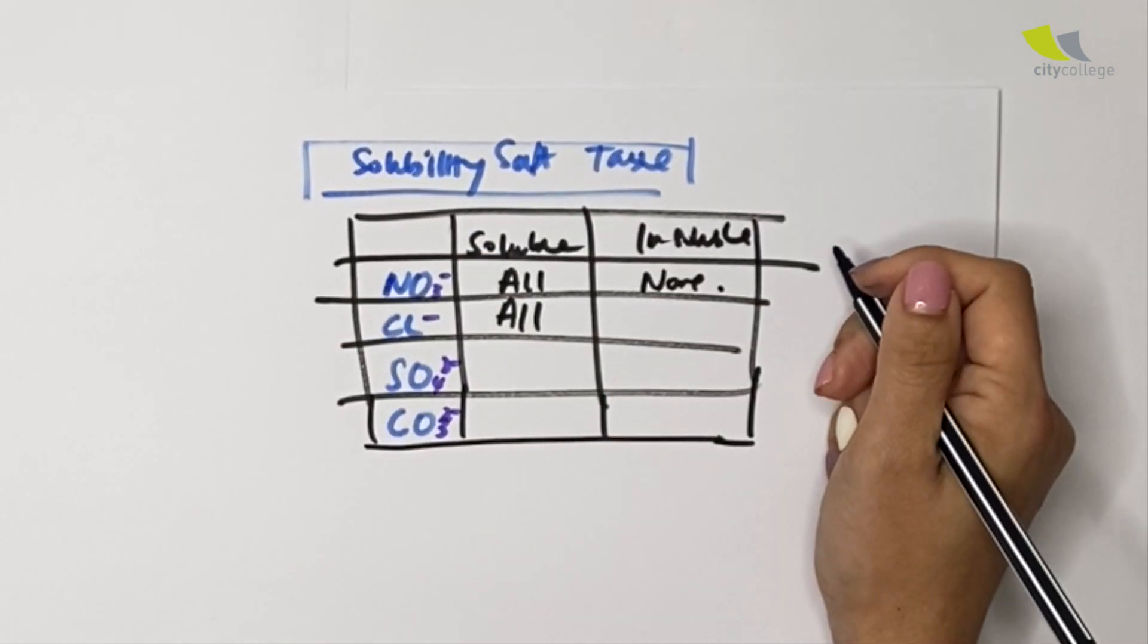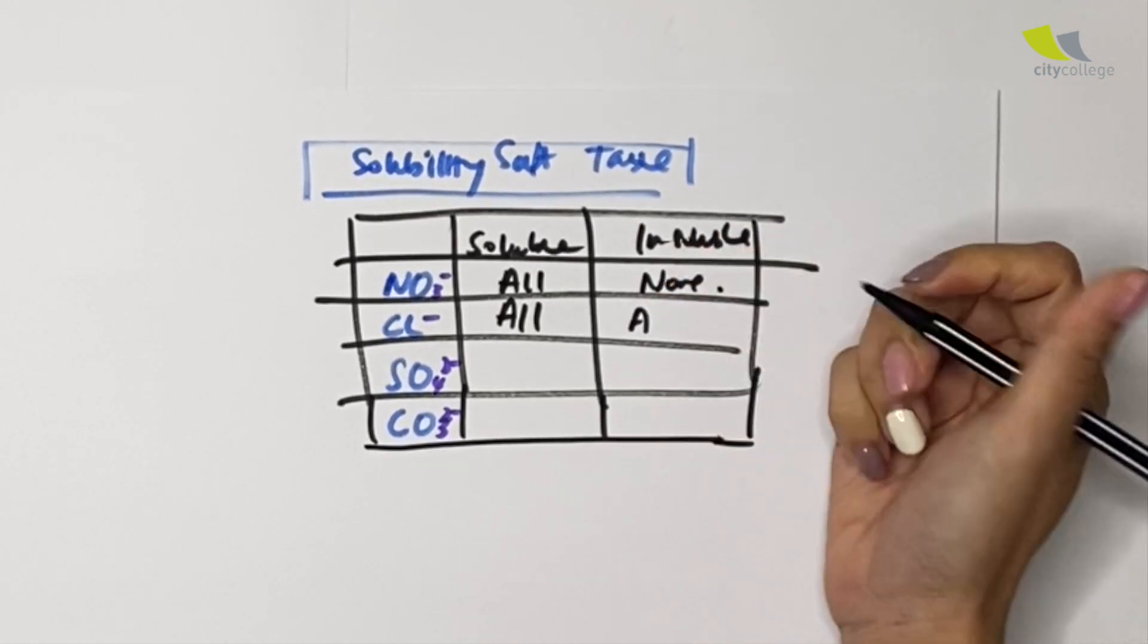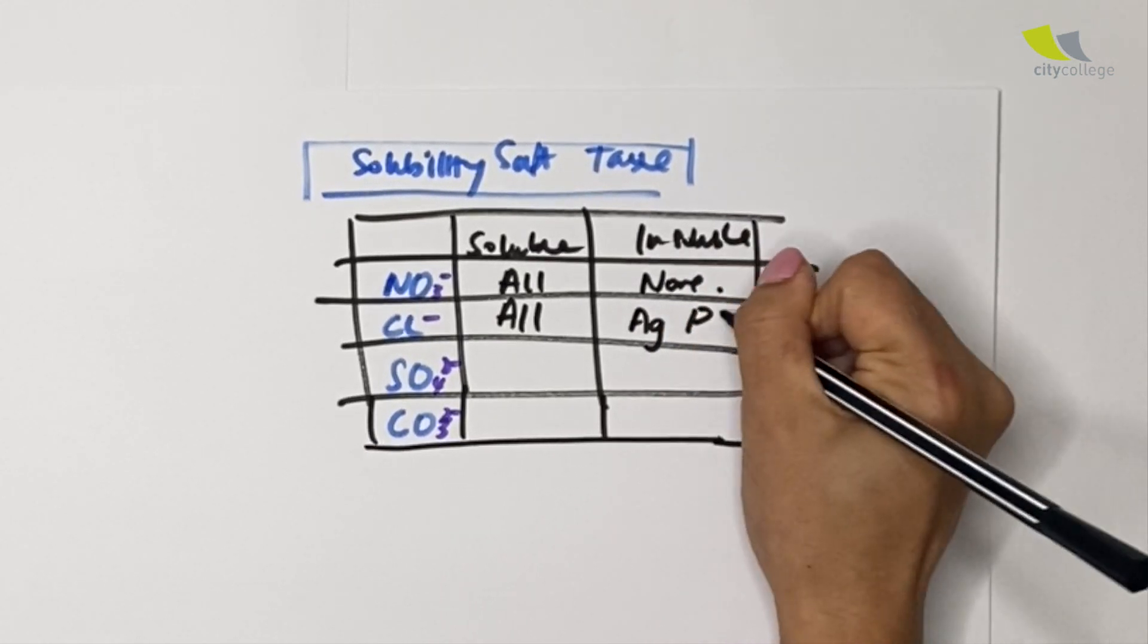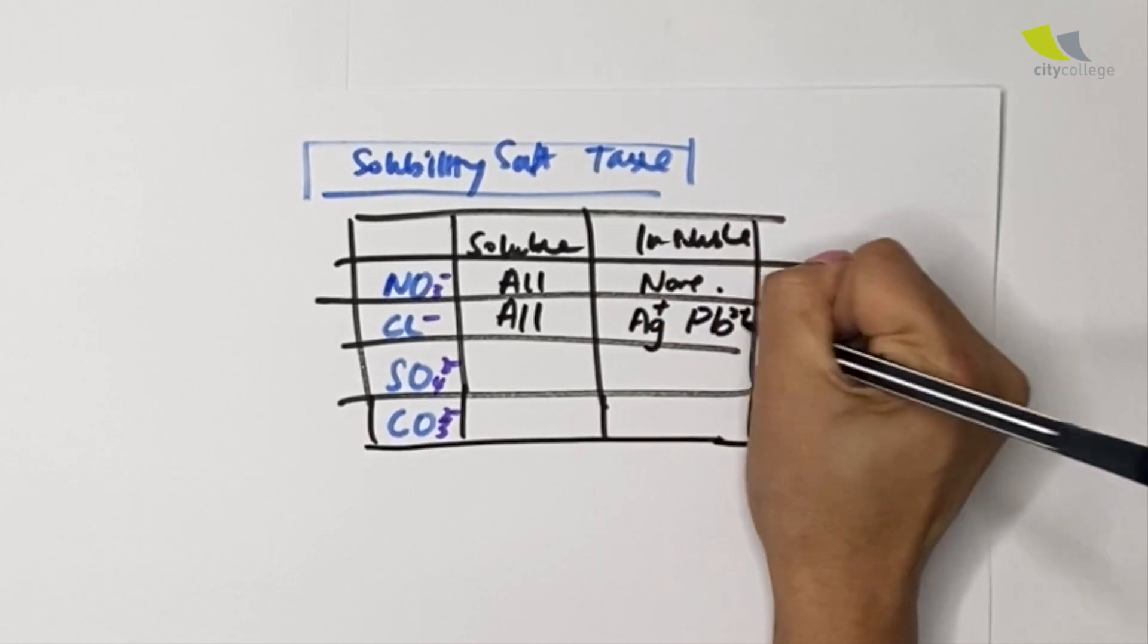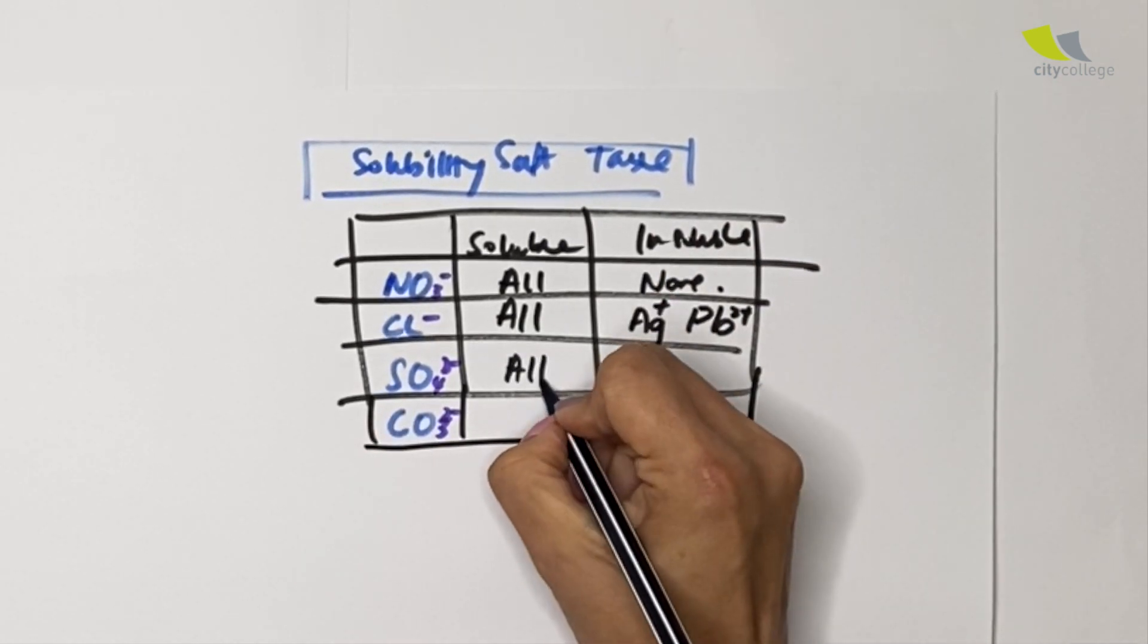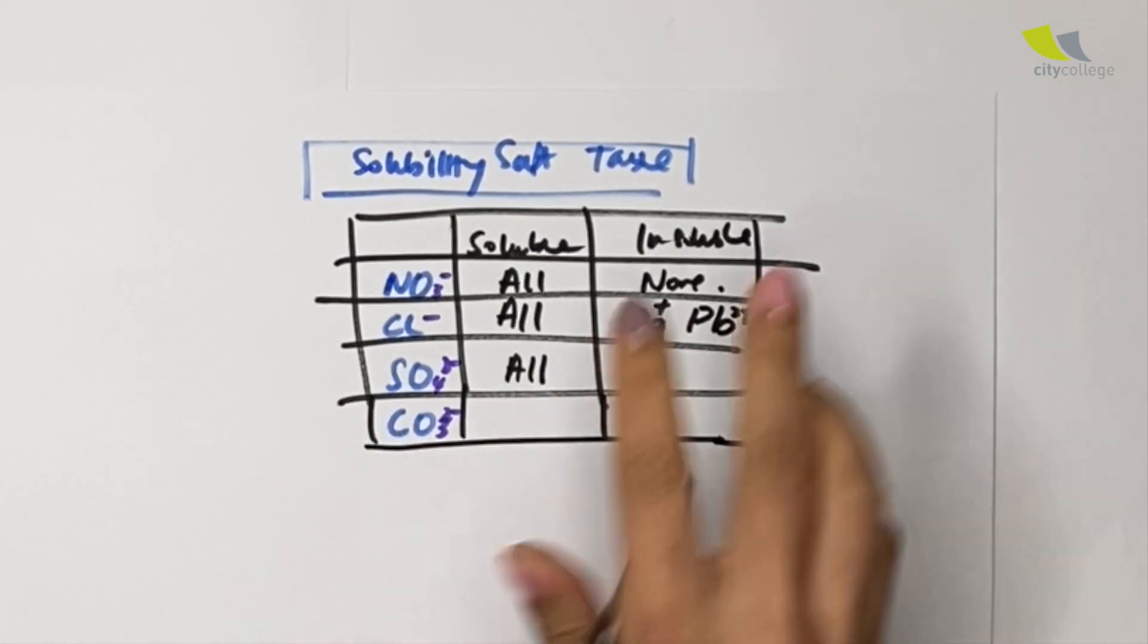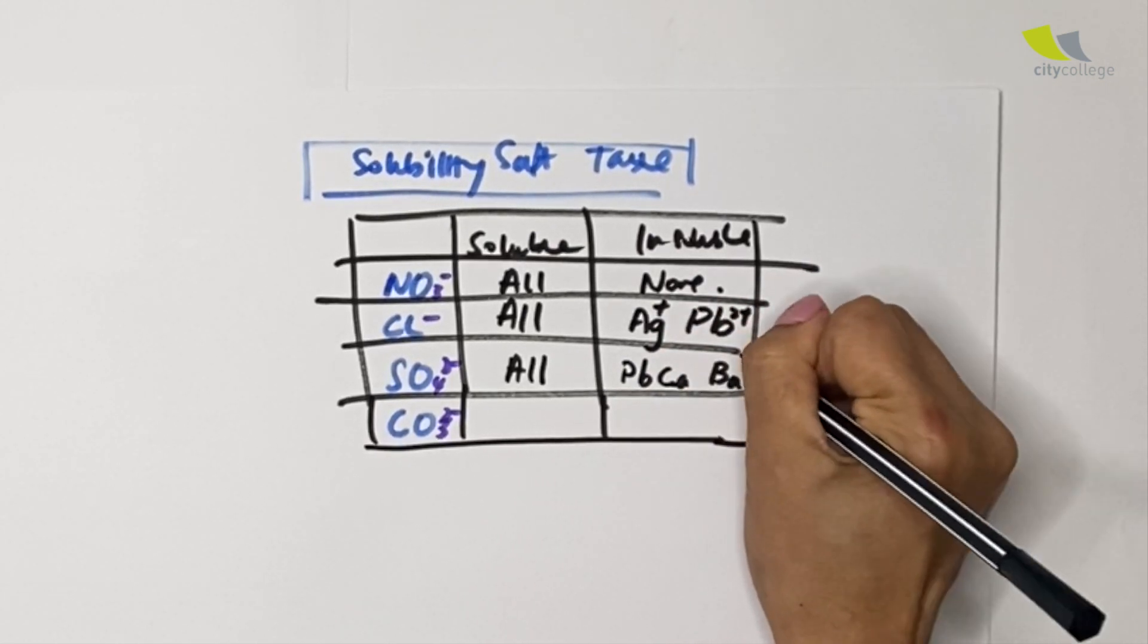Chloride over here is CLSO, remember two very famous brands. All chlorides are soluble except for two. Every one of us, or I should say most of us, own an Apple phone. So Apple Ag and Phone Pb—Ag, Pb, silver and lead. Sulfate here, remember all sulfate is also soluble.